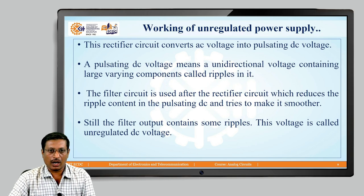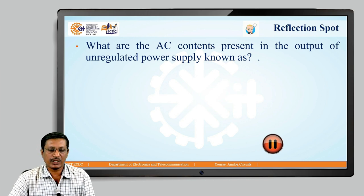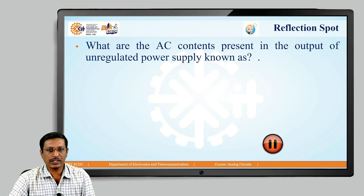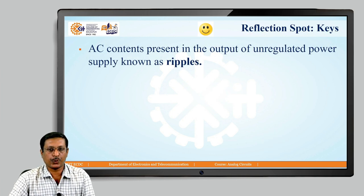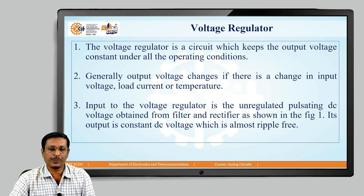But still, the output of the filter contains some sort of ripple or AC components. The AC contents present in the output of an unregulated power supply are known as ripples. So far we have seen that even after using a filter circuit, it is not possible to remove the entire portion of AC contents — that is, ripple. Still some sort of ripple exists.